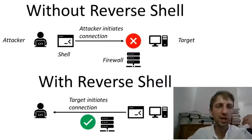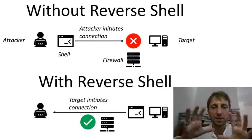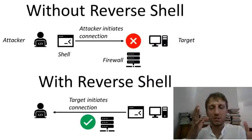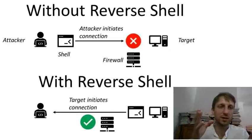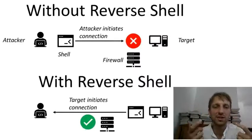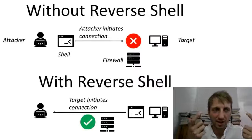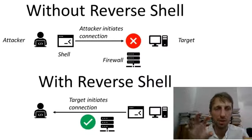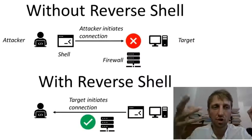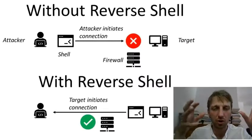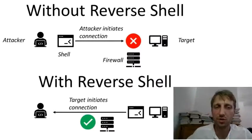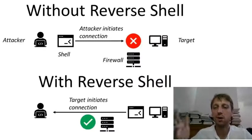A reverse shell is often used by hackers to gain access to a target machine. The target machine then opens a shell to communicate to the attacking machine, rather than the attacking machine communicating to the target machine. The attacking machine basically receives the connection, listening on a given port, and is now able to access the target computer. To accomplish a reverse shell, a hacker must execute a code snippet on the target machine. Reverse shells are also used by security engineers to test and prevent reverse shell attacks, but of course they are also used by hackers.